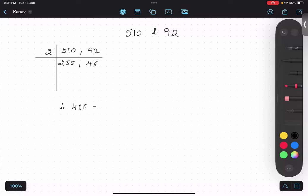HCF is 2 and LCM would be, what I will do, I will just multiply these numbers: 2 multiply by 255 multiply by 46.